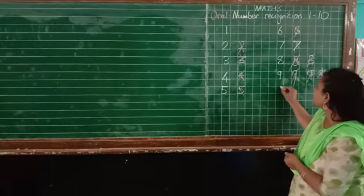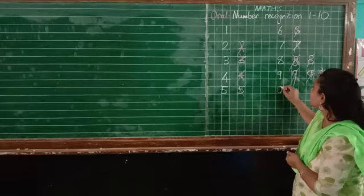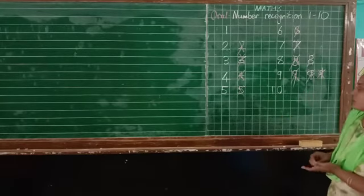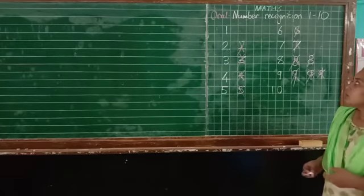Then 10. First you write 0 below 9. Add 1. One, zero, 10. Okay? One, zero, 10. Okay?